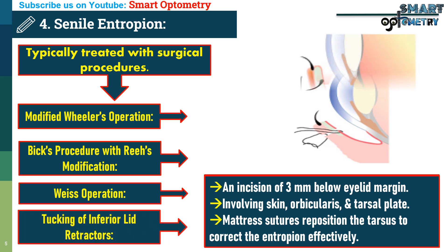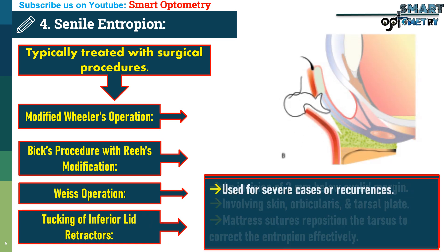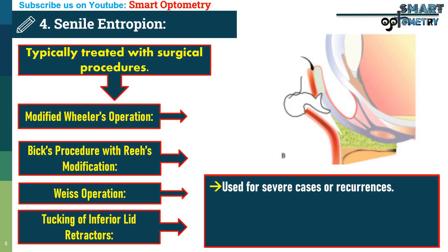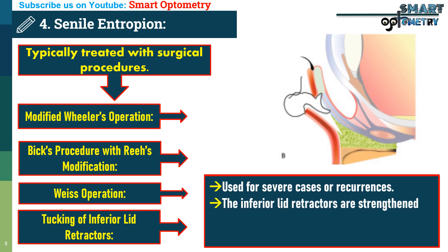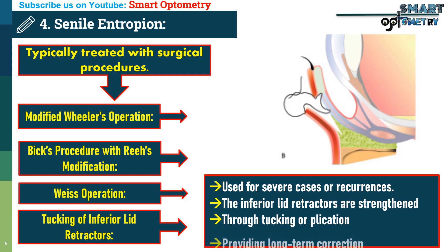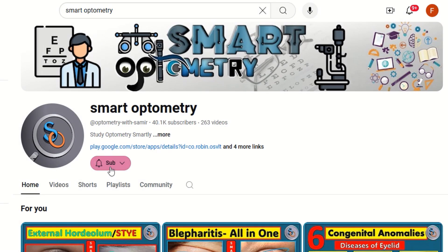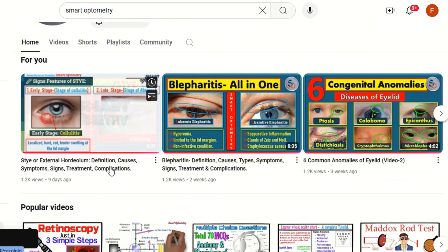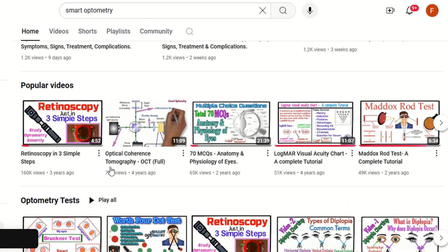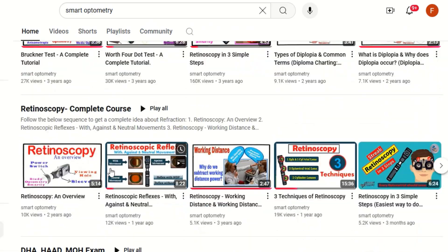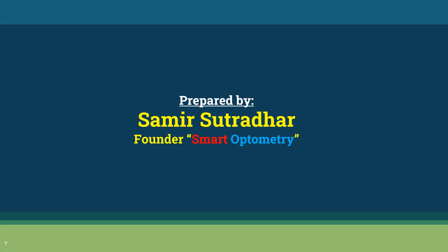Tucking of Inferior Lid Retractors: This advanced technique is used for severe cases or recurrences. The inferior lid retractors are strengthened through tucking, providing long-term correction. Subscribe to Smart Optometry for more videos like this. Stay with Smart Optometry and study optometry smartly.